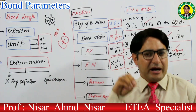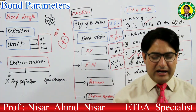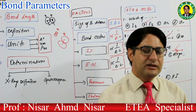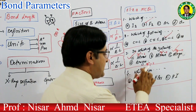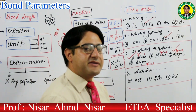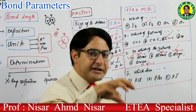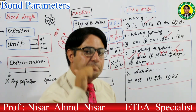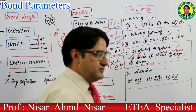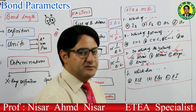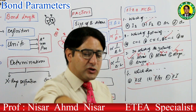Electronegativity difference between the bonded atoms اور bond length کے درمیان inverse relation ہے — اگر electronegativity difference زیادہ ہوگا تو bond length کم ہوگی۔ مثال: HF، HCl، HBr، HI میں اگر H same ہو تو جس کی electronegativity کم ہوگی اس کی bond length زیادہ ہوگی۔ Chlorine کا difference 0.9، bromine کا 0.7، iodine کا 0.4 آئے گا۔